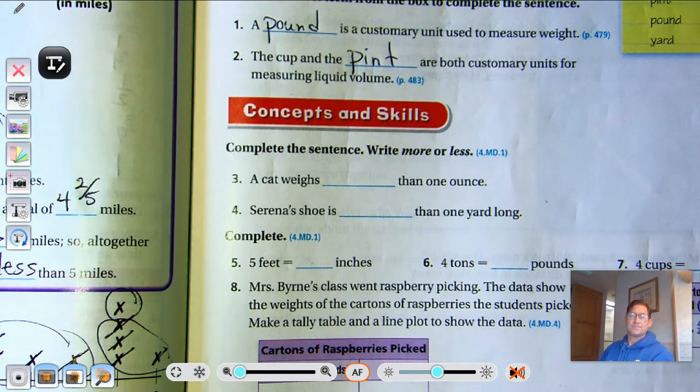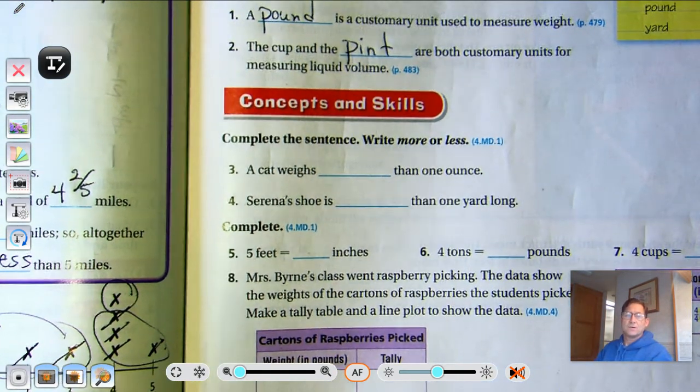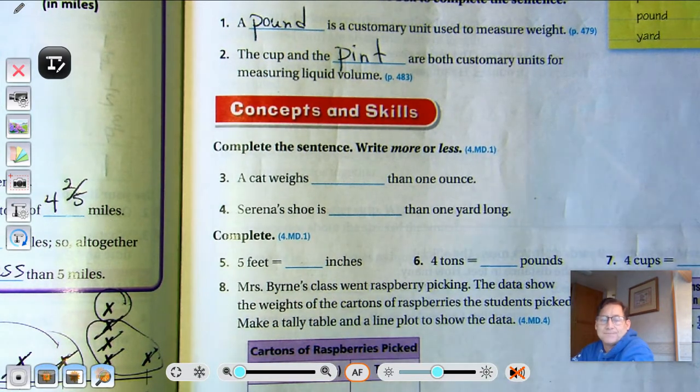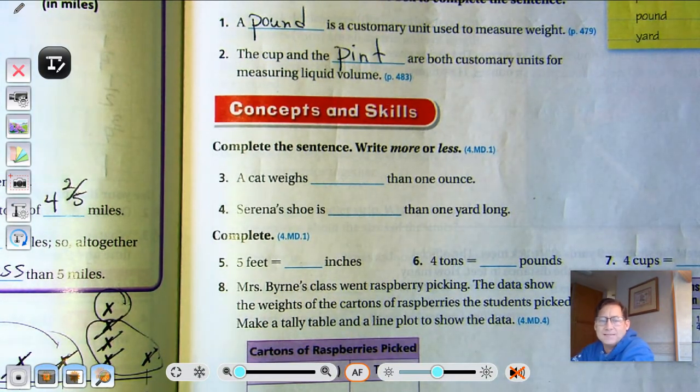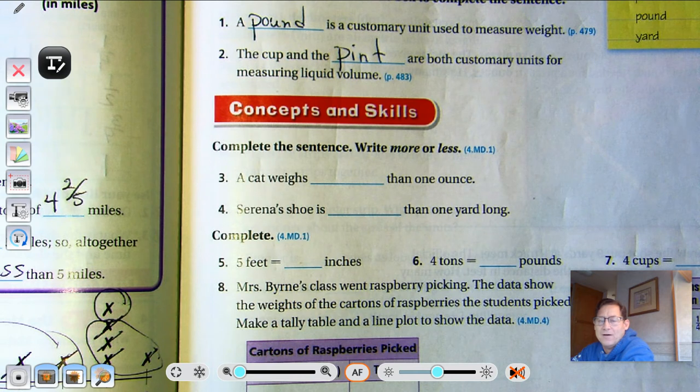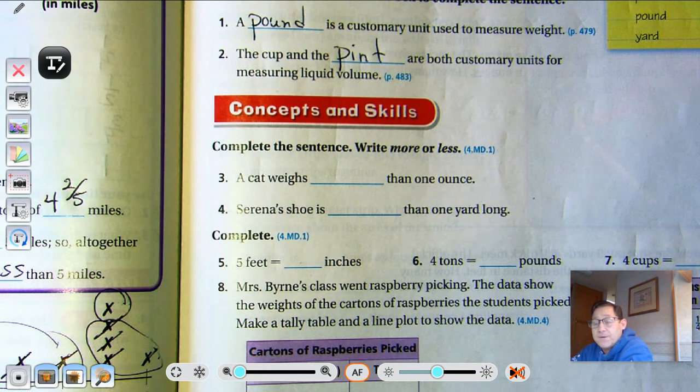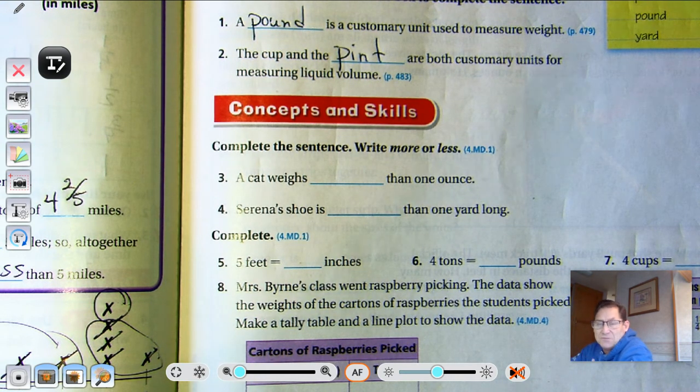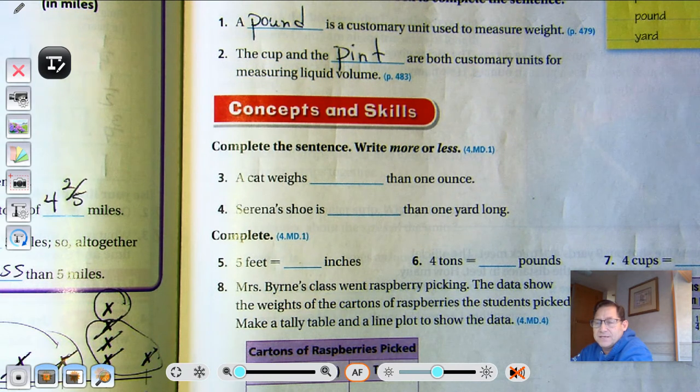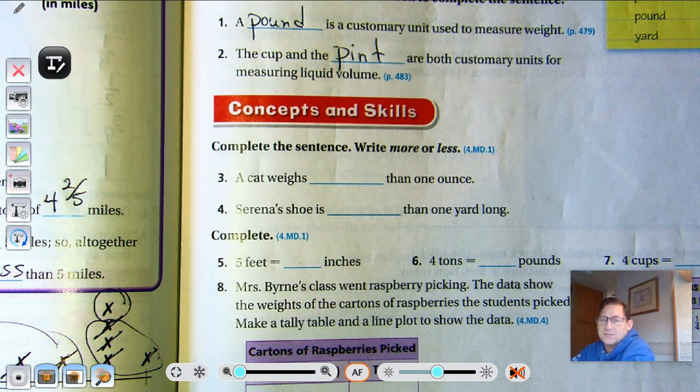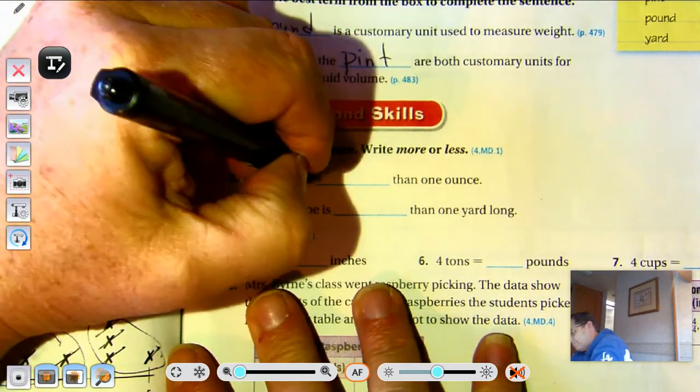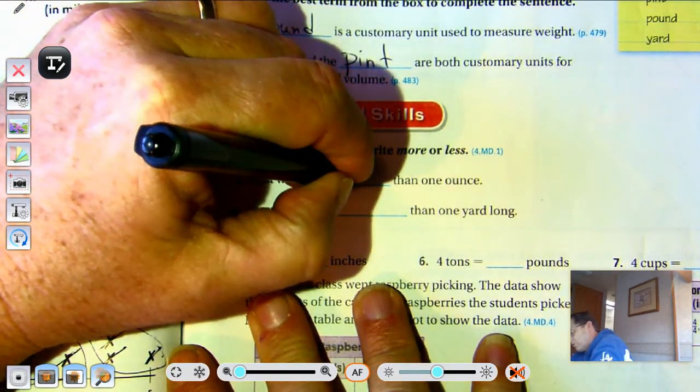All right, complete the sentence, write more or less. A cat weighs blank than one ounce. So remember our benchmark for an ounce was five pencils? A cat's going to weigh more than five pencils, so more than one ounce.